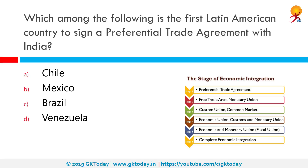Which among the following is the first Latin American country to sign a preferential trade agreement with India? That would be Chile. A preferential trade area or agreement is a trading bloc that gives preferential access to certain products from the participating countries. This is done by reducing tariffs but not by abolishing them completely, and can be established through a trade pact.